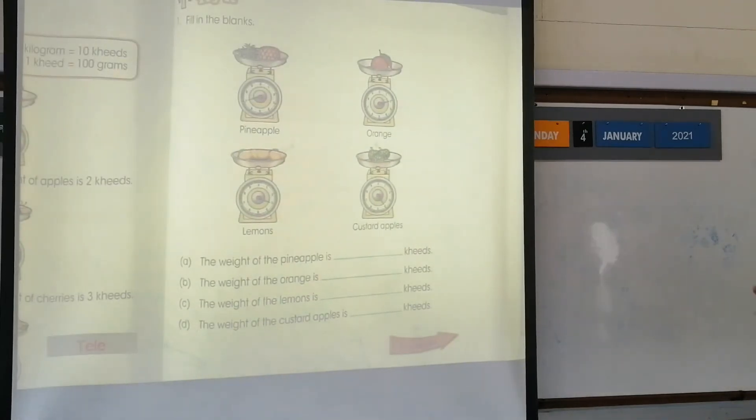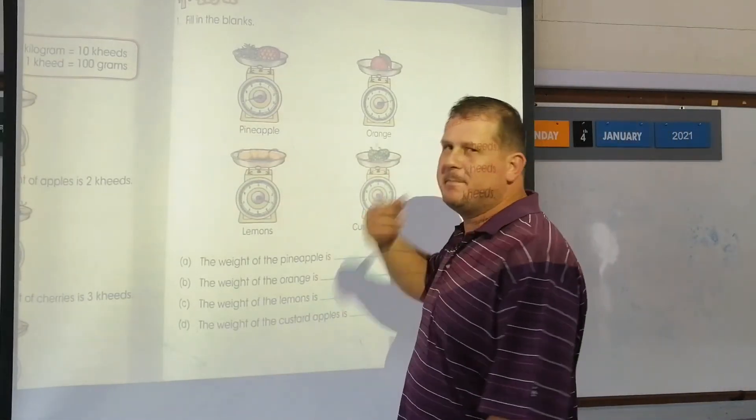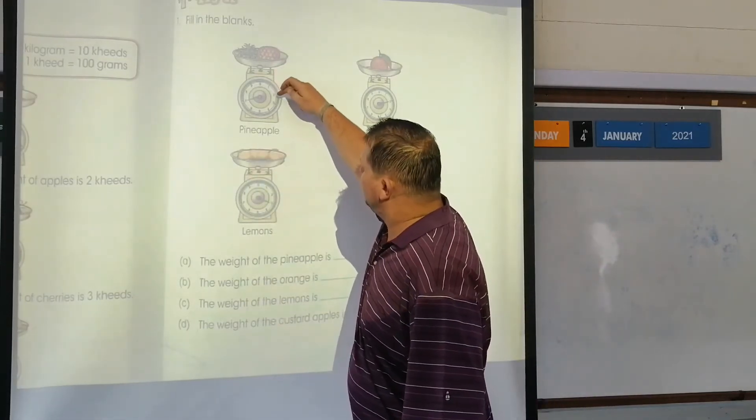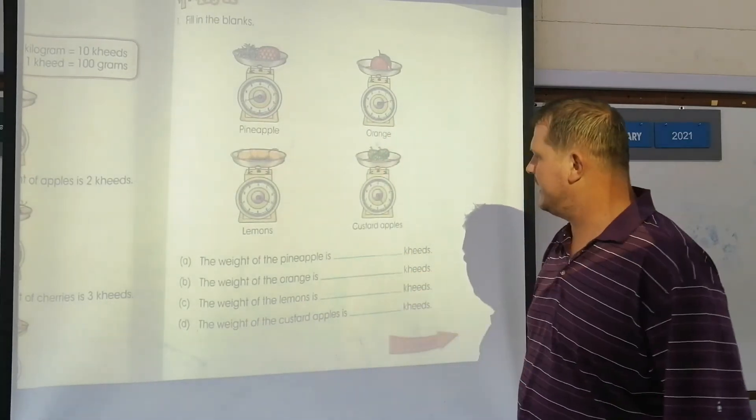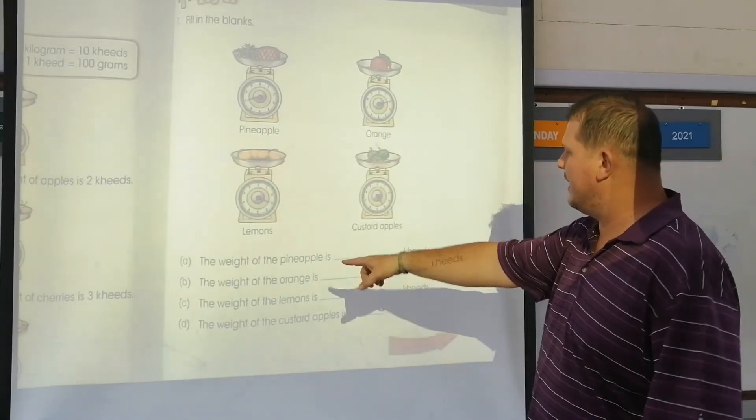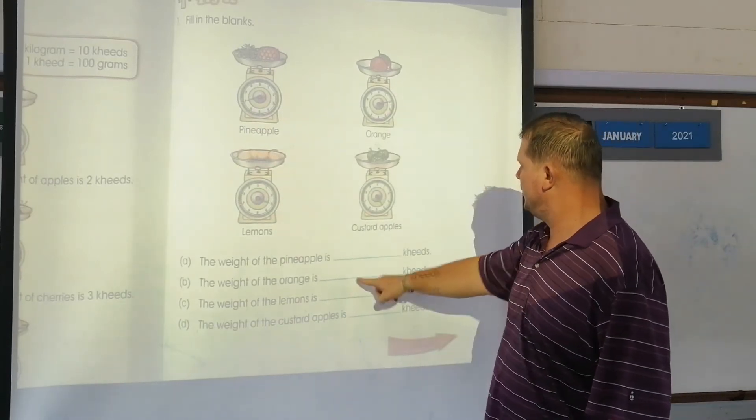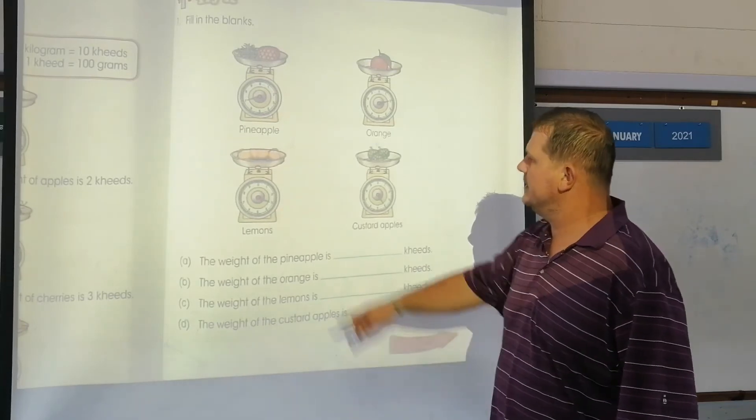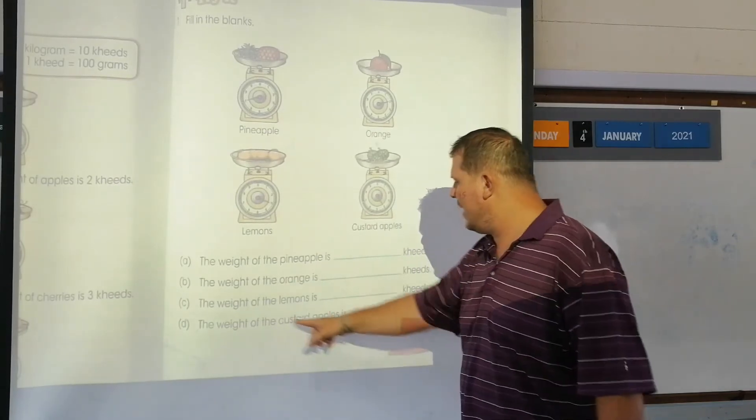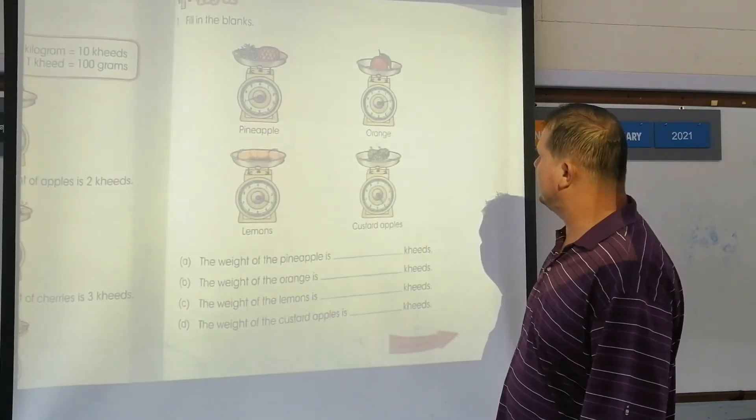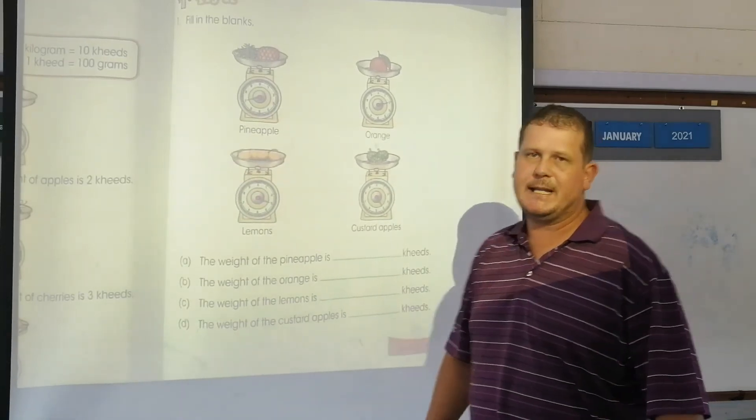I'm going to do this one with you. The weight of the pineapple, it's a bit blurry but I can count: one, two, three, four, five, six, seven. Seven keys. It's just about reading the scale. The weight of the orange, there's the orange, it's two. The weight of the lemons, here's the lemons, one, two, three. And the weight of the custard apples, custard apples, one, two, three, four keys.